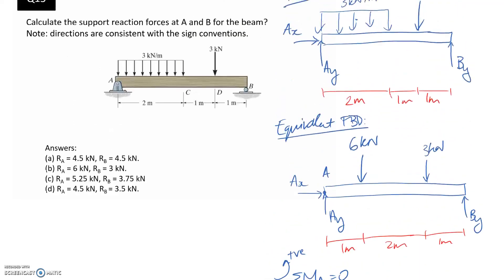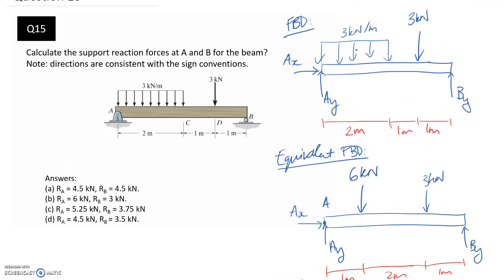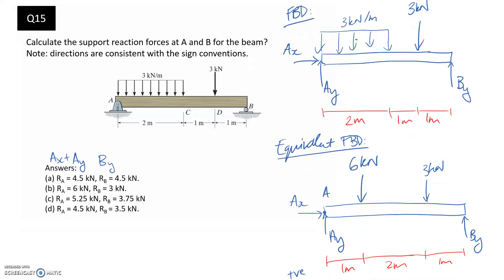If you go and look at your answers that you were given, RB is the same as the reaction at B, so we called this By, and RA is the reaction A, so that's going to be Ax and Ay. Straight away, we got 3.75, so that would suggest that C is the answer. But we can go back and check to make sure that we also get 5.25 as well.